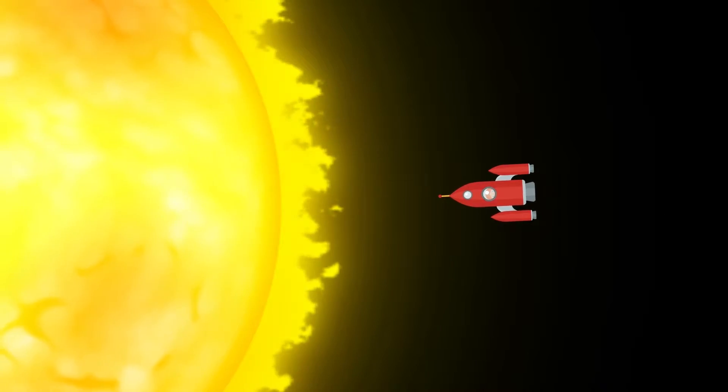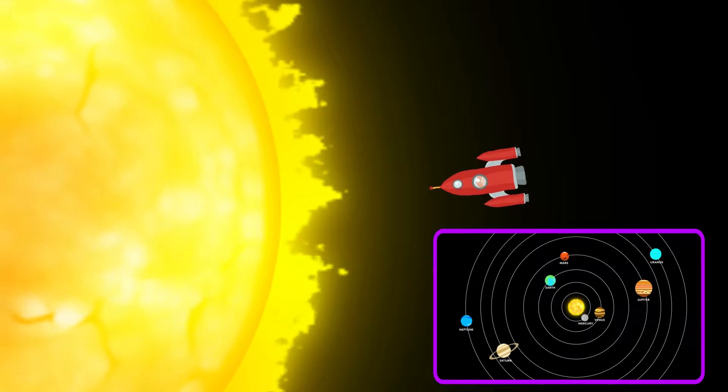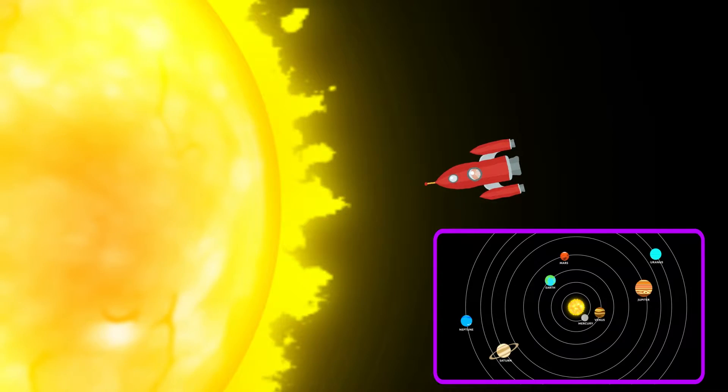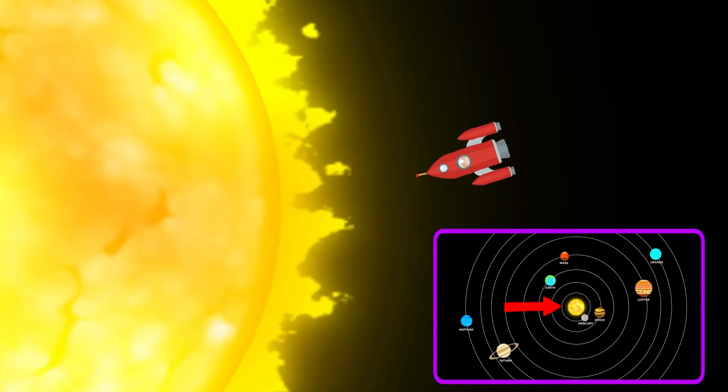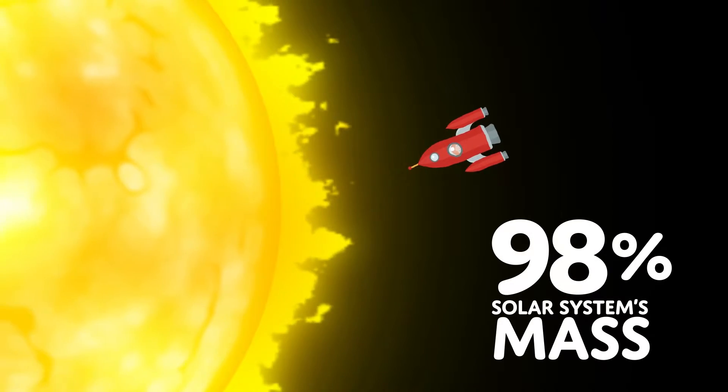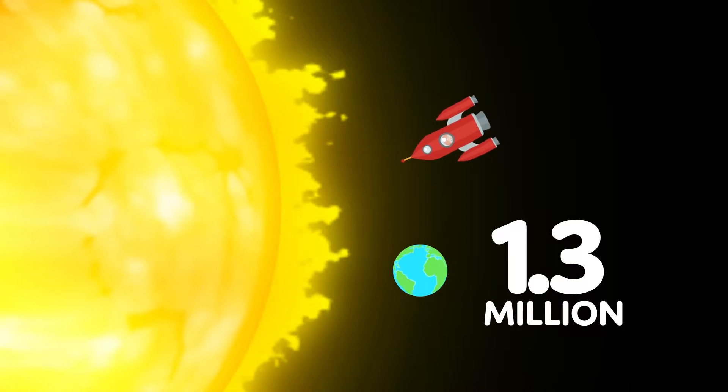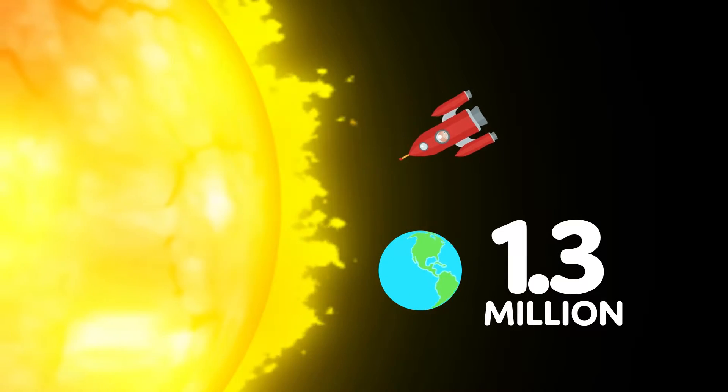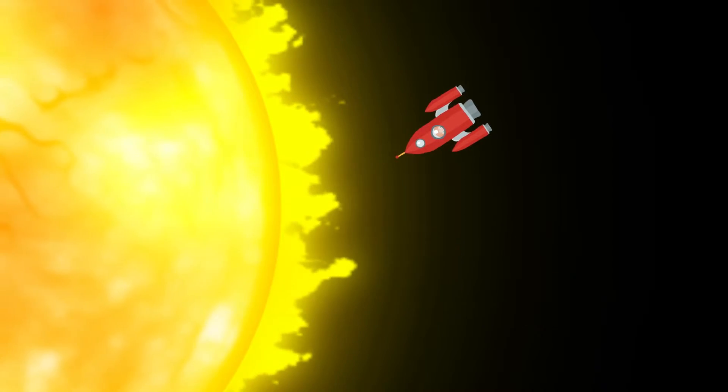Let's start at the sun. The sun is a star found at the center of our solar system. It makes up around 98% of the solar system mass. 1.3 million Earths could fit inside the sun. Wow, that's a lot of Earths! It's too hot!